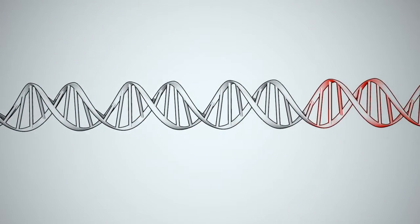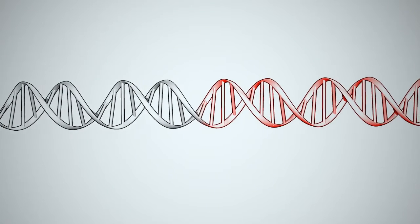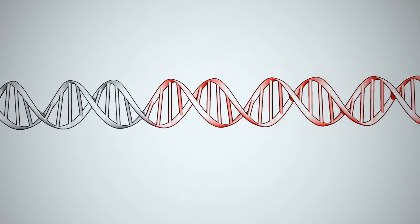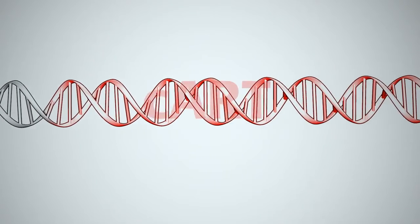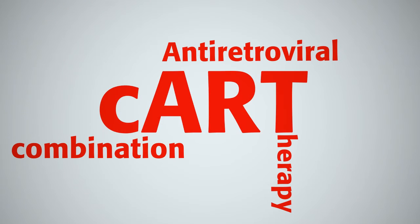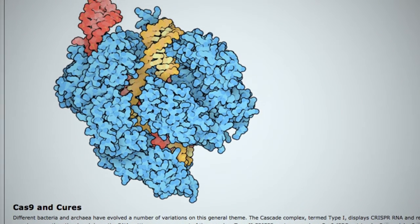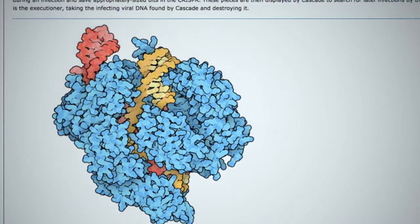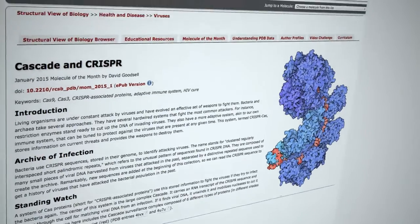HIV is a particularly insidious virus as it integrates its genome into the infected cell's genome and can persist in an infected individual even after years of treatment with anti-HIV drugs. This is why it is important that infected individuals adhere to a consistent drug regimen. Researchers are looking for effective ways to fight this dormant form of the virus, such as attacking it with DNA cutting molecules like CRISPR-Cas9.